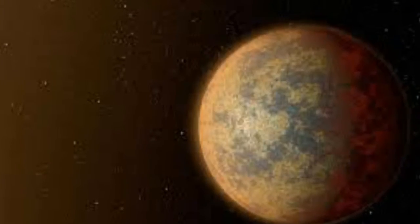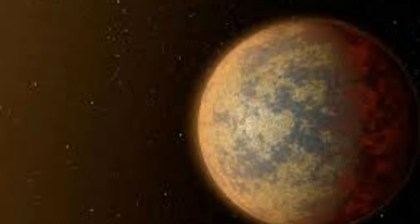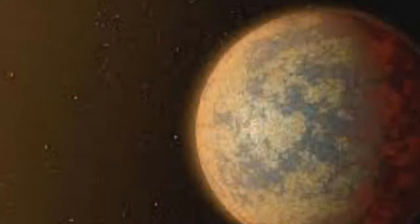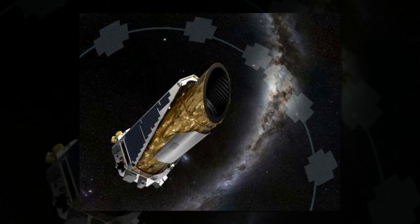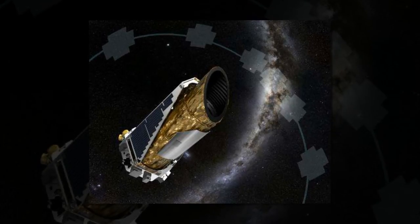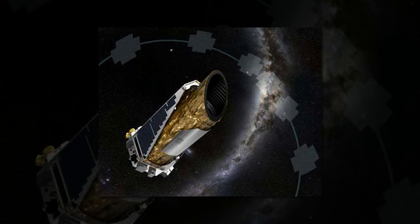Kepler-453b is the third Kepler circumbinary planet found to lie in the habitable zone of its host pair of stars. The astonishingly high rate of occurrence in the habitable zone is caused by the types of stars observed by Kepler, generally sun-like, and the need for the planet to be sufficiently far from the stars for its orbit to be stable.